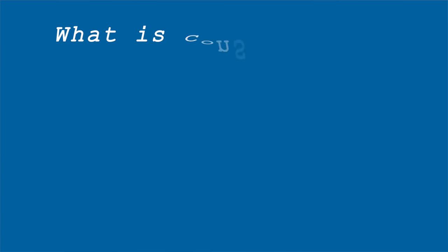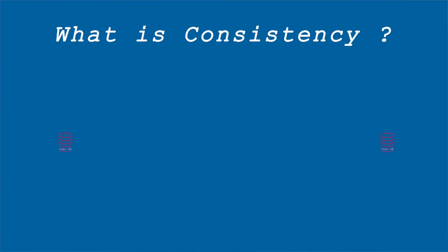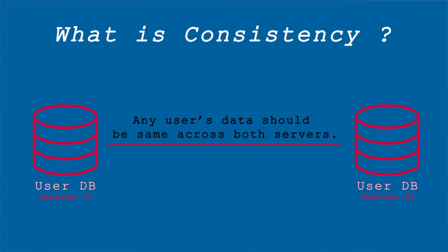What is consistency? If you have multiple copies of data, those two data pieces should match each other — the content should be the same. That's the general idea.